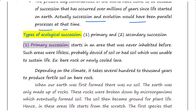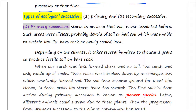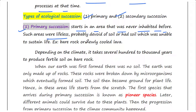There are two types of ecological succession: primary and secondary succession. Primary succession is the succession that starts in an area that was never inhabited before. Such areas were lifeless, probably devoid of soil, or had soil which was unable to sustain life. Examples include bare rock or newly cooled lava.